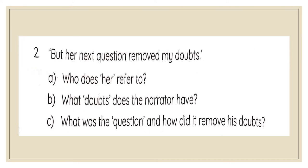'But the next question removed my doubts.' Who does 'her' refer to? Her refers to the girl traveling in the same train compartment as the narrator. What doubts does the narrator have? The narrator had doubts whether the girl had noticed that he was blind or not. What was the question and how did it remove his doubts? The question 'Why don't you look out of the window?' removed his doubts — she had clearly not noticed his impairment and asked him to look out of the window and see the weather for himself.